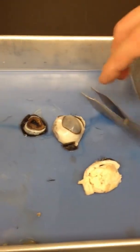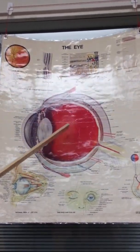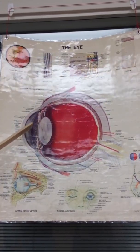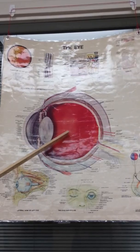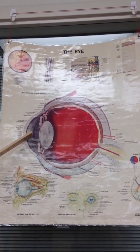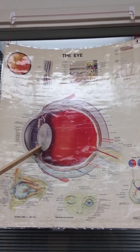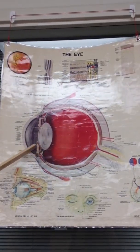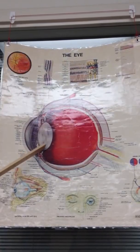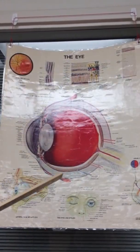We can divide the eye into a front and back portion. The dividing point is the lens. Behind the lens is the posterior cavity, filled with thick vitreous humor. In front of the lens is the anterior cavity, filled with thinner, watery aqueous humor. The anterior cavity can be further divided into the anterior and posterior chambers, separated by the iris. In front of the iris is the anterior chamber; behind the iris is the posterior chamber — both within the anterior cavity, also known as the anterior segment.